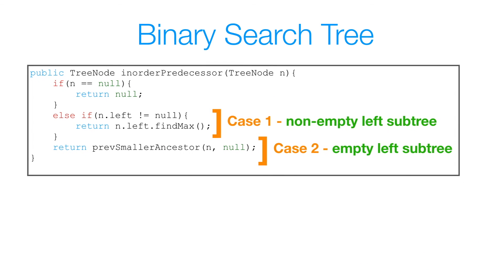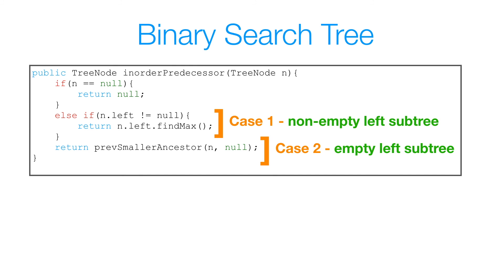Now all we have to do is incorporate these two method calls in our inOrderPredecessor method. First, we check if n is equal to null — if so, we return null. Otherwise, for case 1, if n.left is not null, we call n.left.findMax to get the maximum node in the left subtree. If n doesn't have a left subtree, we call prevSmallerAncestor on n and null. Null is passed in to handle the case where a node has no predecessor — for example, the minimum node in the tree has nothing before it, so we return null.